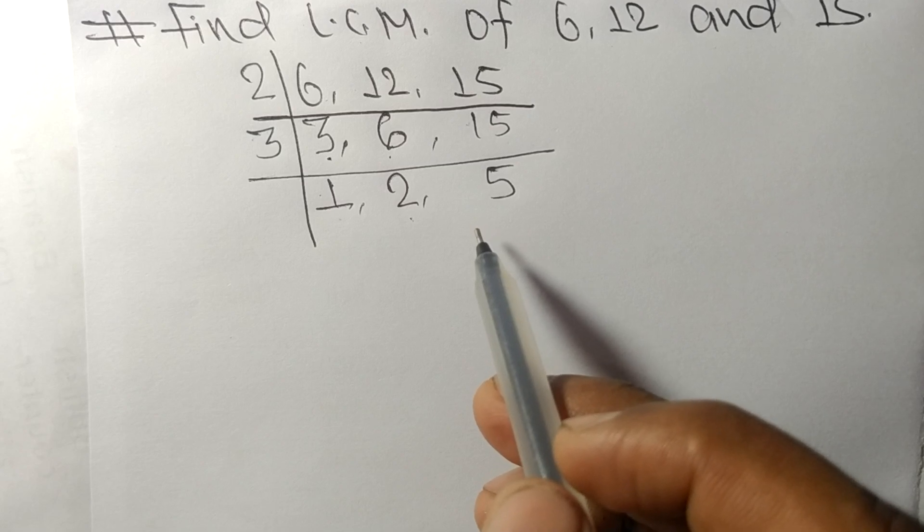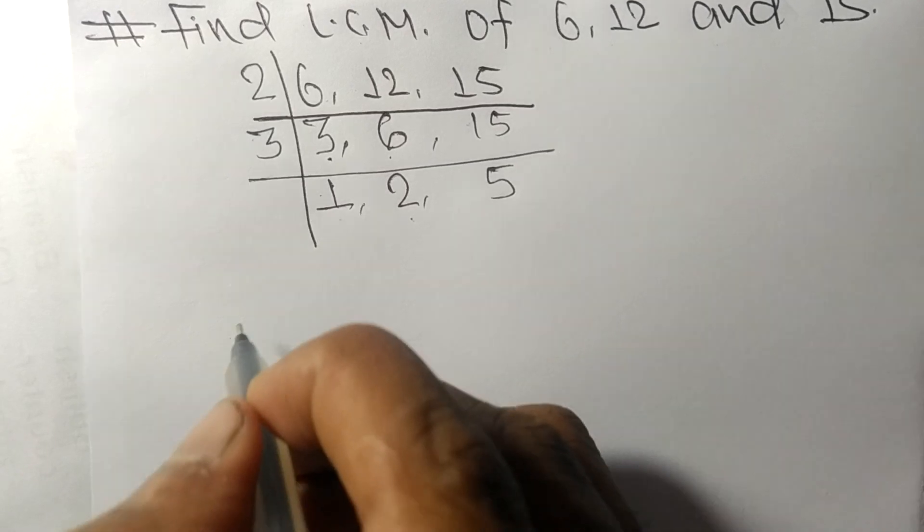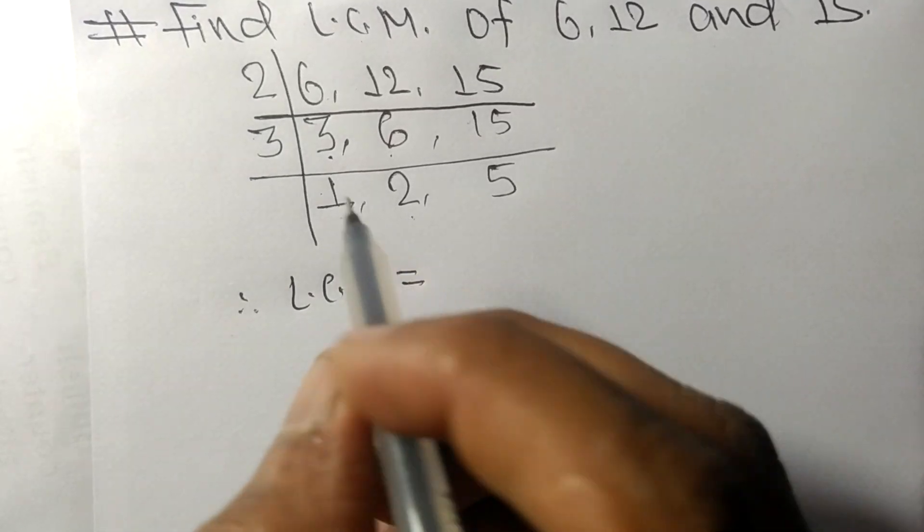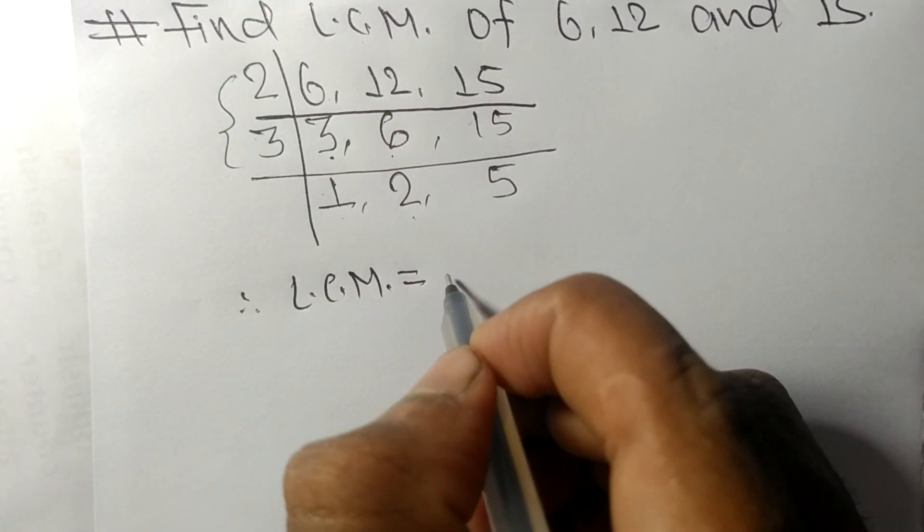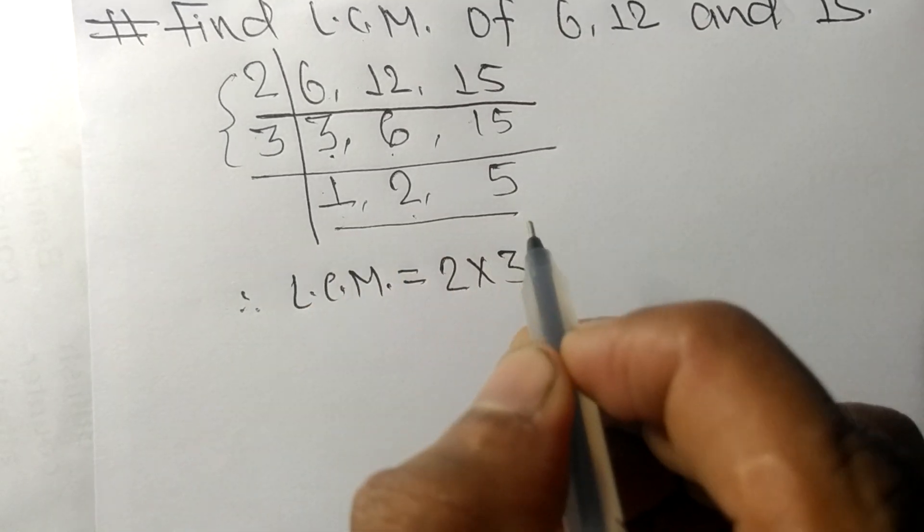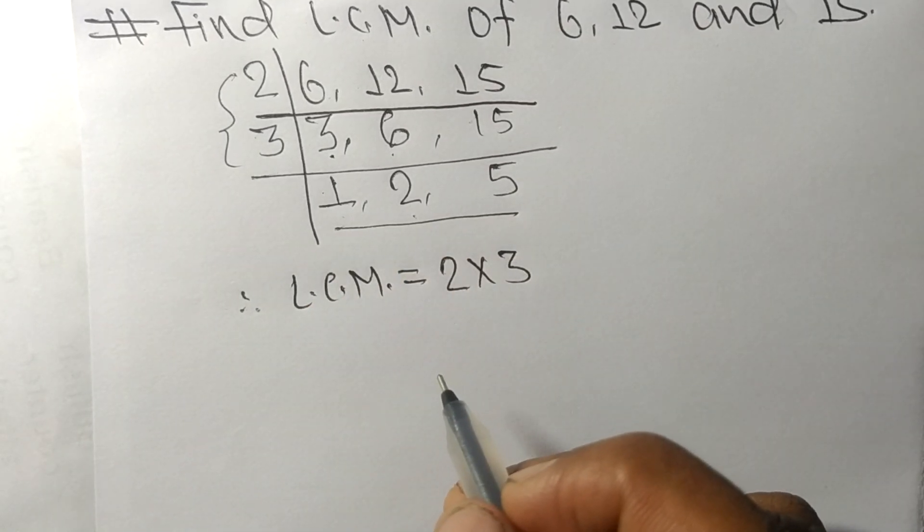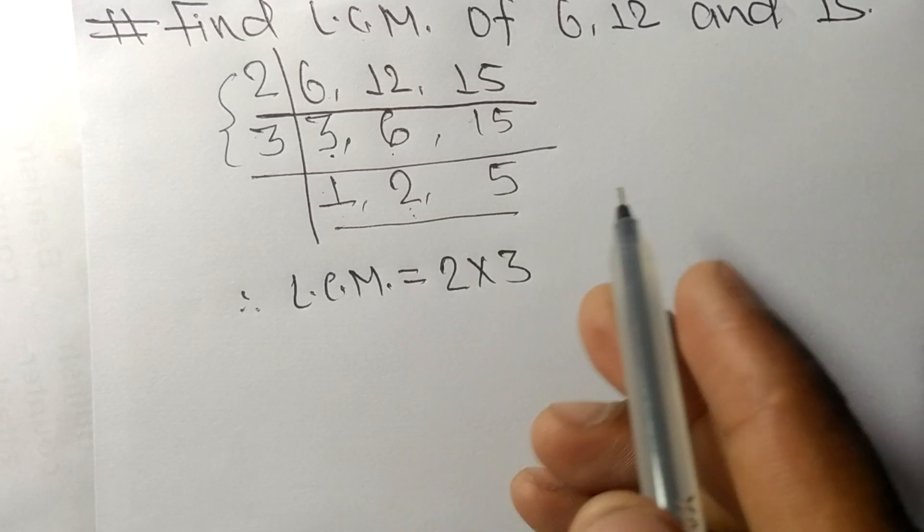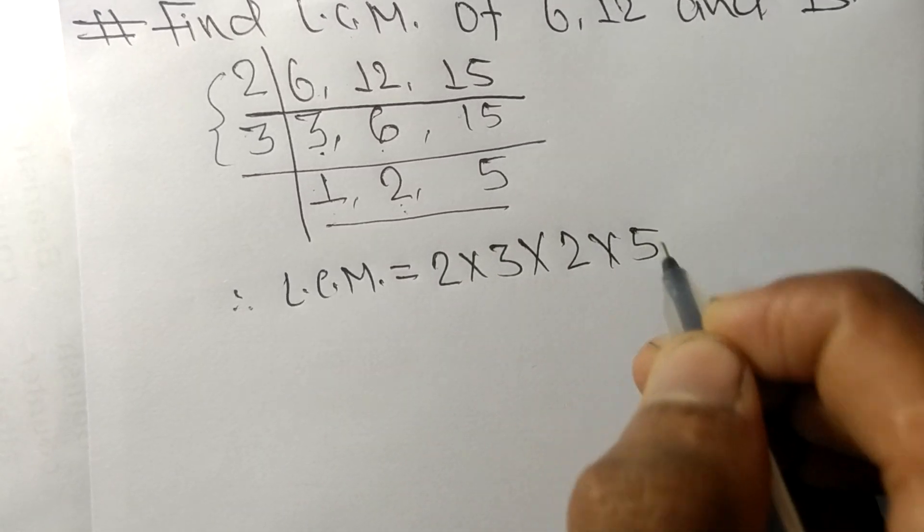Therefore, the LCM is equal to, from this side it is 2 and 3, from this side we have to choose the numbers greater than 1, that is 2 and 5.